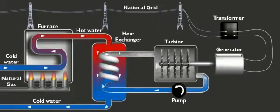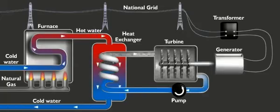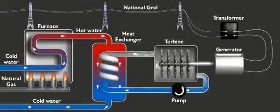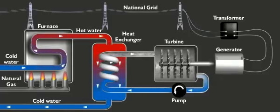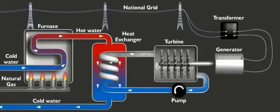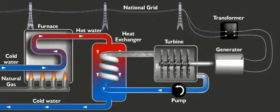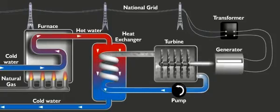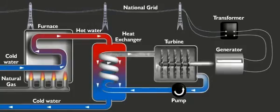The electrical energy is distributed around the country via a system of cables and pylons called the National Grid System. The energy transfer that occurs when the fuel is burned is from chemical to heat, heat to kinetic.